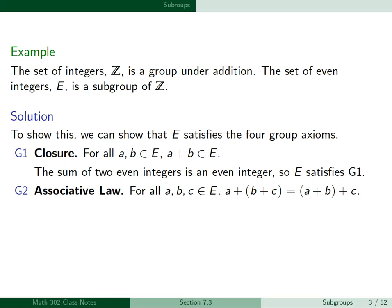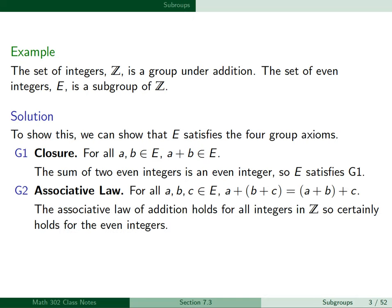Next is G2, the associative law. For all elements A, B, and C in E, A plus the quantity B plus C is equal to the quantity A plus B plus C. The associative law of addition holds for all integers in Z, so it certainly holds for the even integers. Therefore, E satisfies G2.